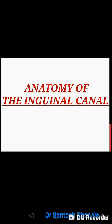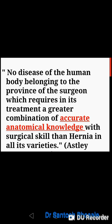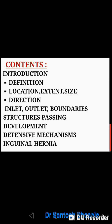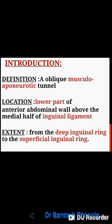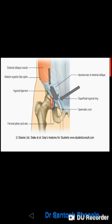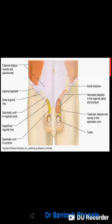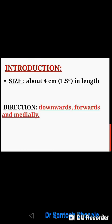Anatomy of the inguinal canal is very important. As Ashley Cooper said, hernia requires more accurate anatomical knowledge. We will cover the definition, location, extent, size, and direction. The inguinal canal is an oblique musculo-aponeurotic tunnel located in the lower part of the anterior abdominal wall, above and parallel to the middle half of the inguinal ligament. It extends from the deep inguinal ring to the superficial inguinal ring, and is approximately 3.8 to 4 centimeters in length.